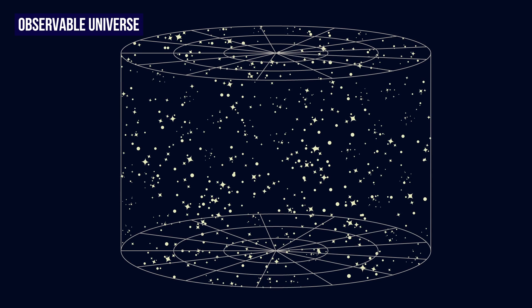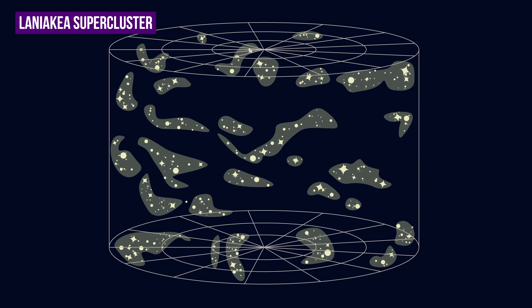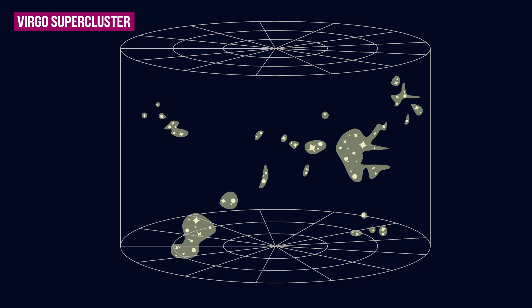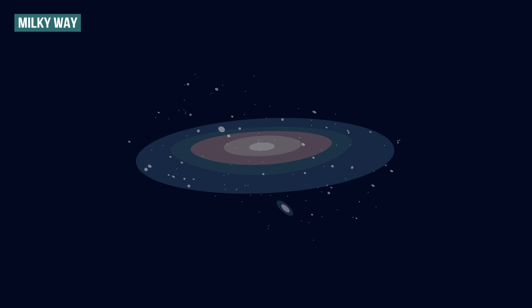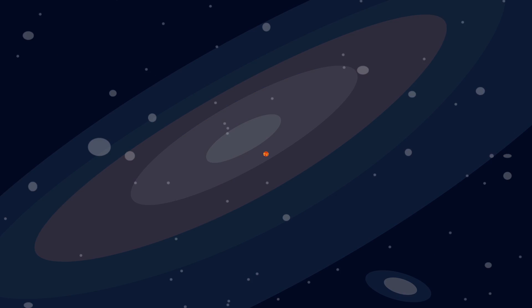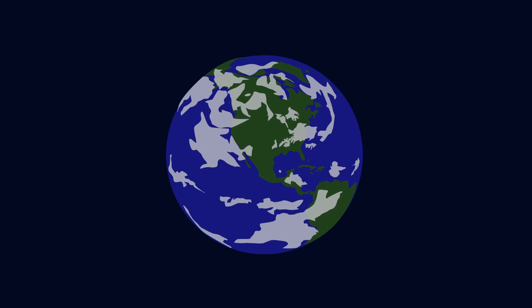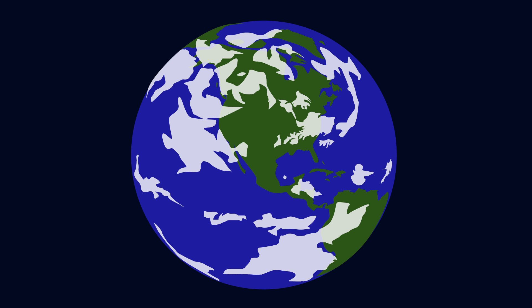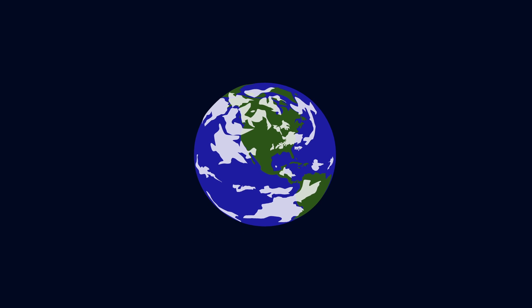To recap, in our observable universe, there is the Laniakea supercluster, in which there is the Virgo supercluster, in which there is the local group, in which there is the Milky Way, in which there is the solar system, in which there is the Earth on which we are. All of humanity's fears, hopes and achievements, all contained within a small rock wandering in space.